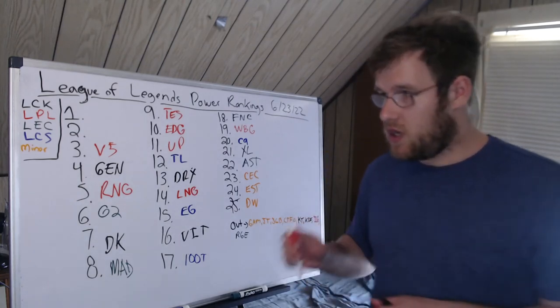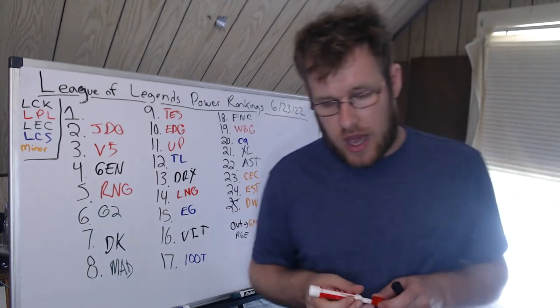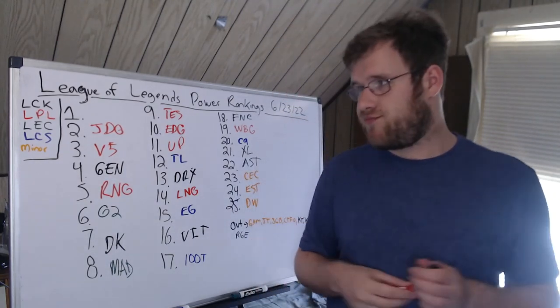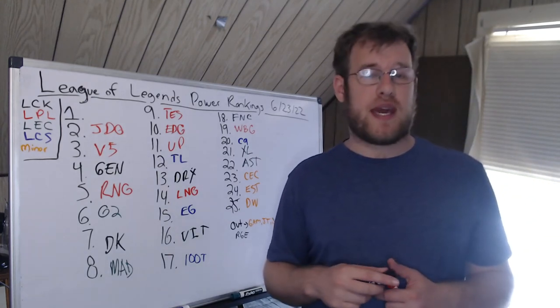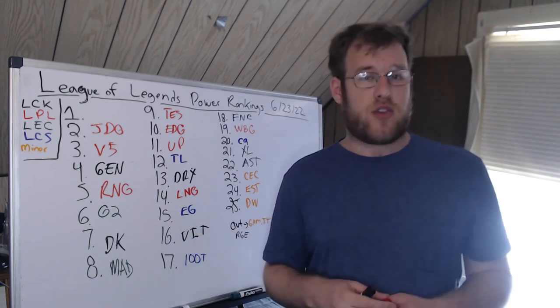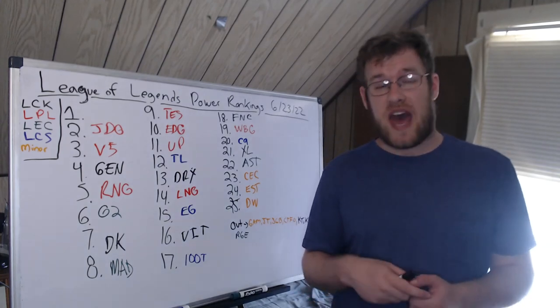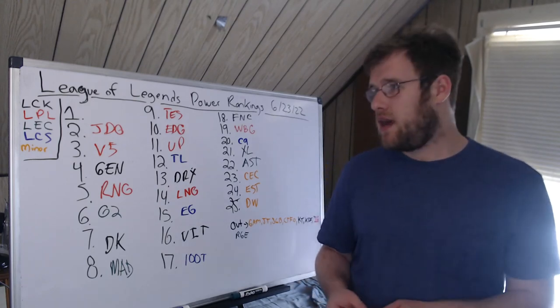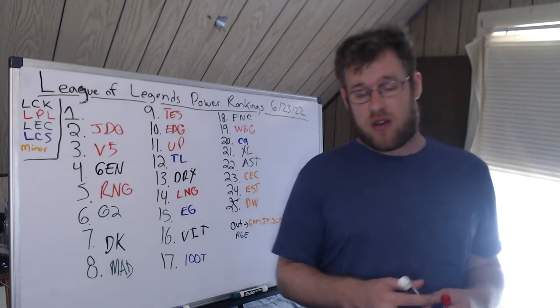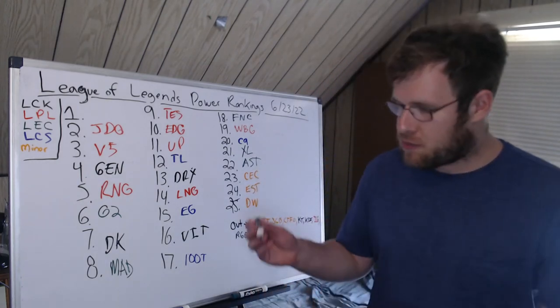Second, we have JDG. JDG are 4-0. They beat EDG and OMG. 369 has been pretty good. Yagao has been playing very well for being a secondary or even third-tier carry for the team—fourth-tier really. I mean, he's more of a supportive player because Kanavi carries this team sometimes. Hope and Missing have been better than I expected them to be. They are definitely a very, very good team right now, continuing their success they had in mid-to-late spring.